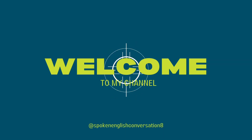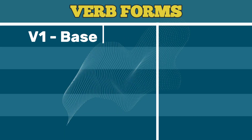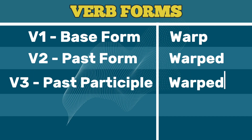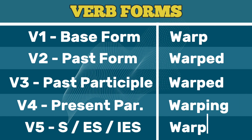Spoken English Conversations — subscribe please. V1 Base Form: Warp. V2 Past Form: Warped. V3 Past Participle: Warped. V4 Present Participle: Warping. V5 Simple Present (Third Person Singular): Warps.